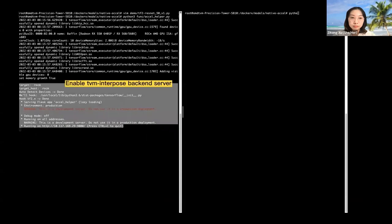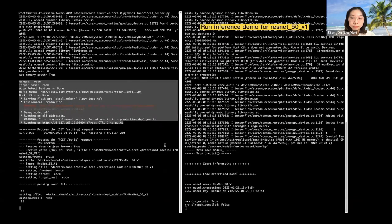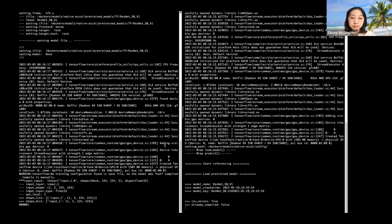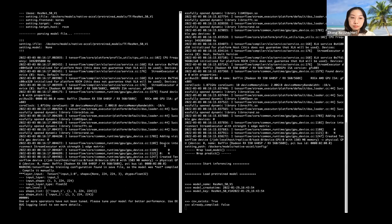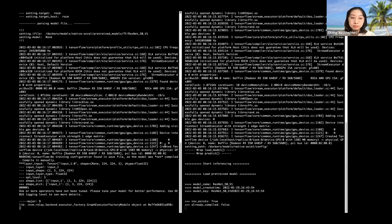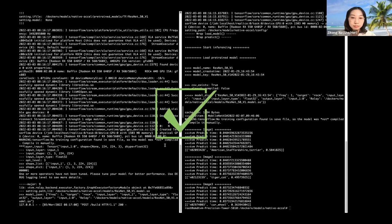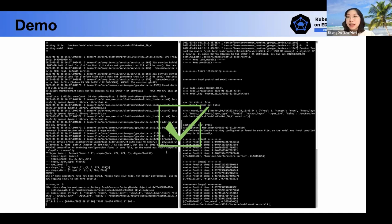We can run TVM Interposer's inference demo on AMD GPU node. Enable the backend compiler. See the target is ROCm. In another terminal, we can run inference demo for ResNet 50 V1 model. But if you're interested in other backend interposers such as OpenVINO, please feel free to contact us. Okay, let's move on to the next slide.